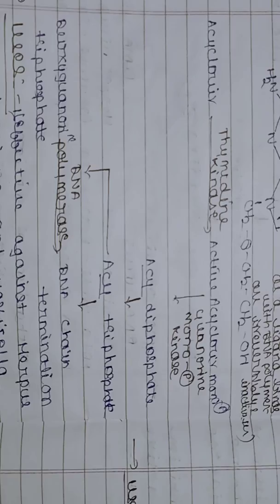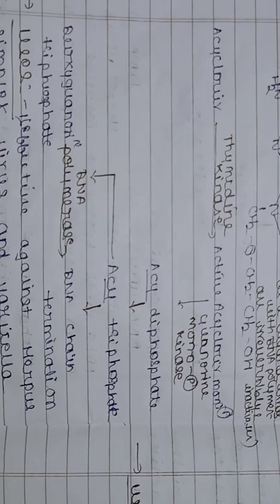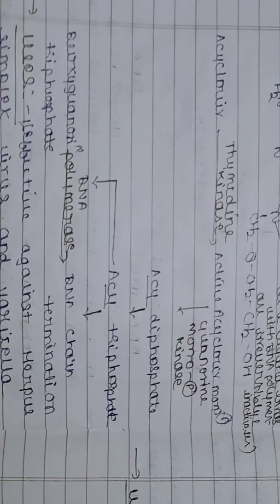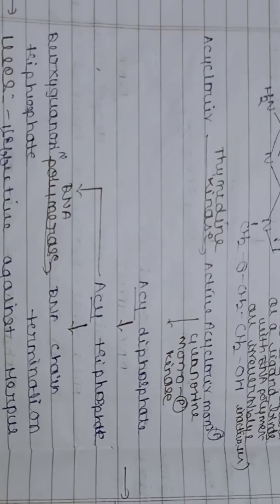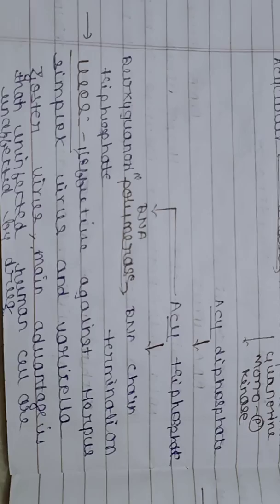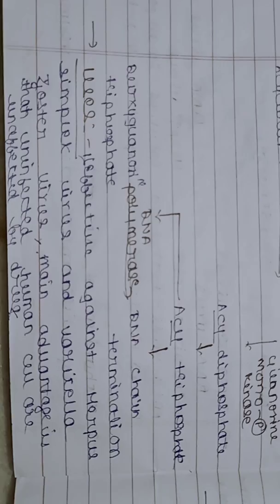The mechanism of action of acyclovir is shown here: acyclovir acts upon thymidine kinase, forming acyclovir monophosphate. Then guanosine monophosphate kinase acts to form acyclovir diphosphate. Phosphate kinase then acts to form acyclovir triphosphate, which acts on the DNA polymerase enzyme, leading to DNA chain termination. It also acts on deoxyguanosine triphosphate, which also leads to DNA chain termination.